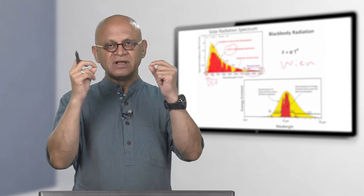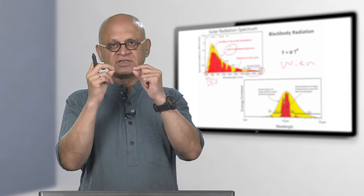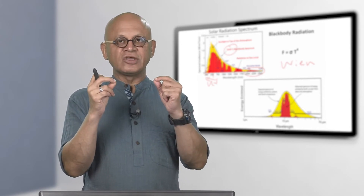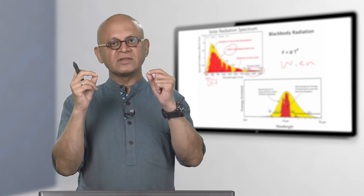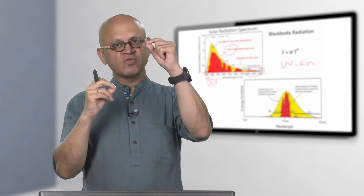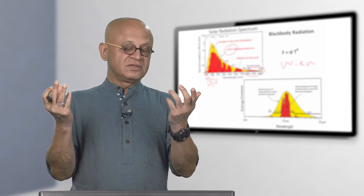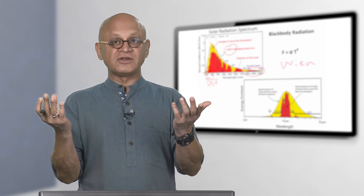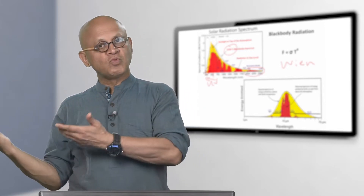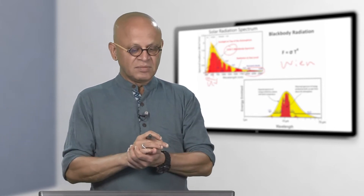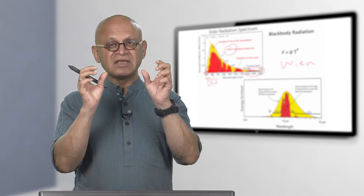It just depends on how the quantum physics of that molecule works. Typically, symmetric molecules like O2 and N2 are not sensitive to short wave or long wave, so they are not greenhouse gases. Good news, because there is a lot of nitrogen and oxygen — if they were greenhouse gases we would warm up like Venus. But CO2, which is symmetric, actually has a bending mode, so it is sensitive to long wave radiation.